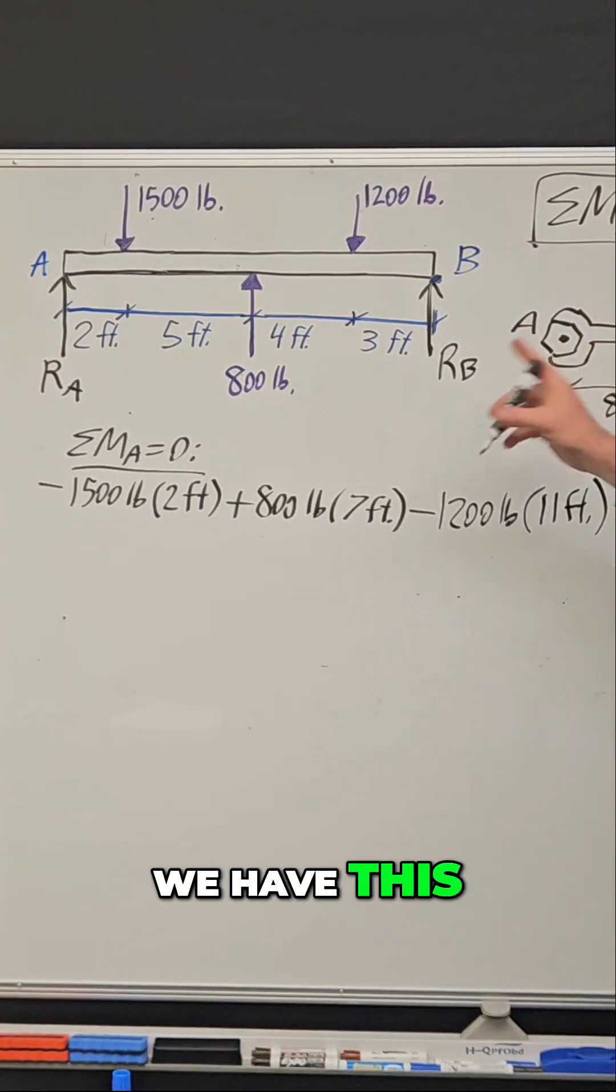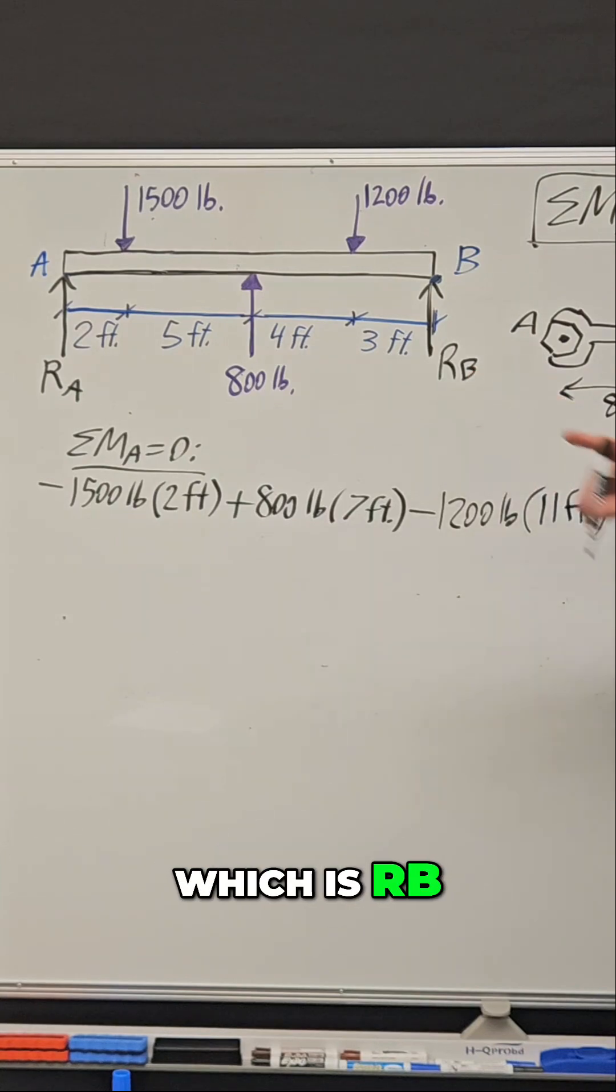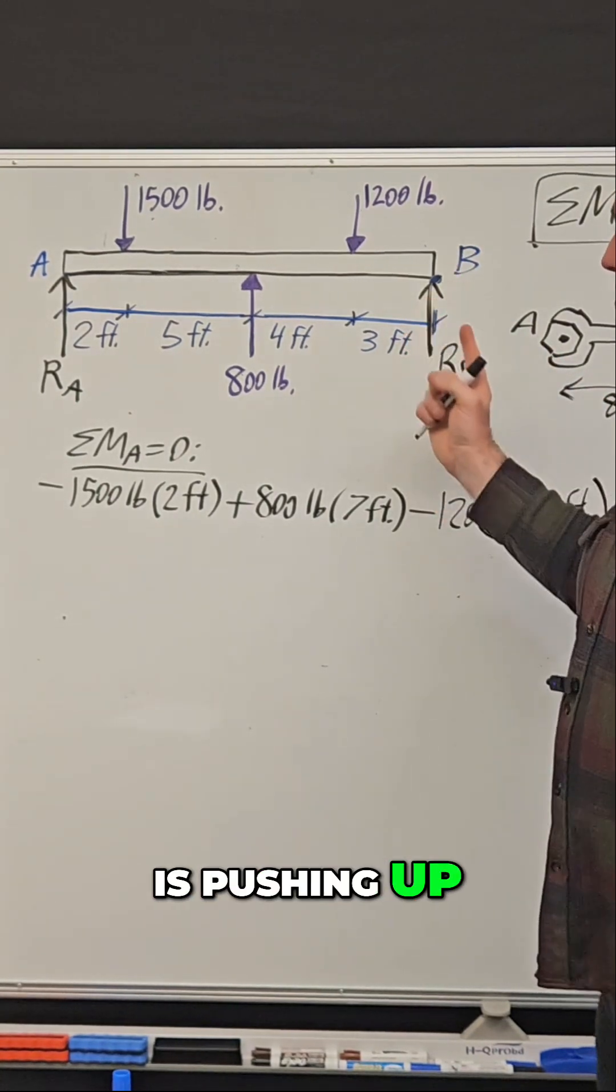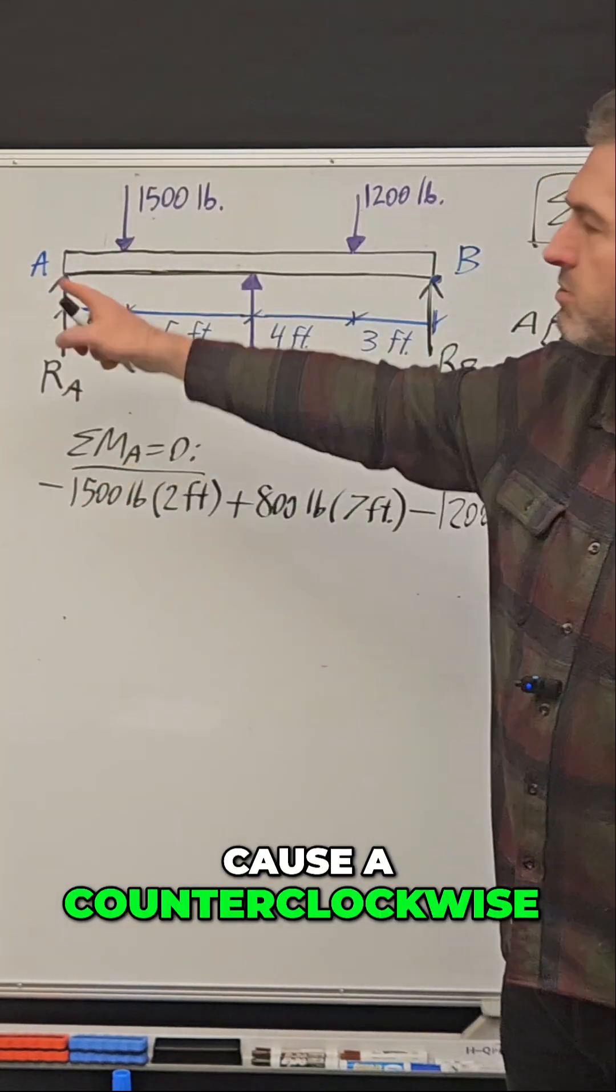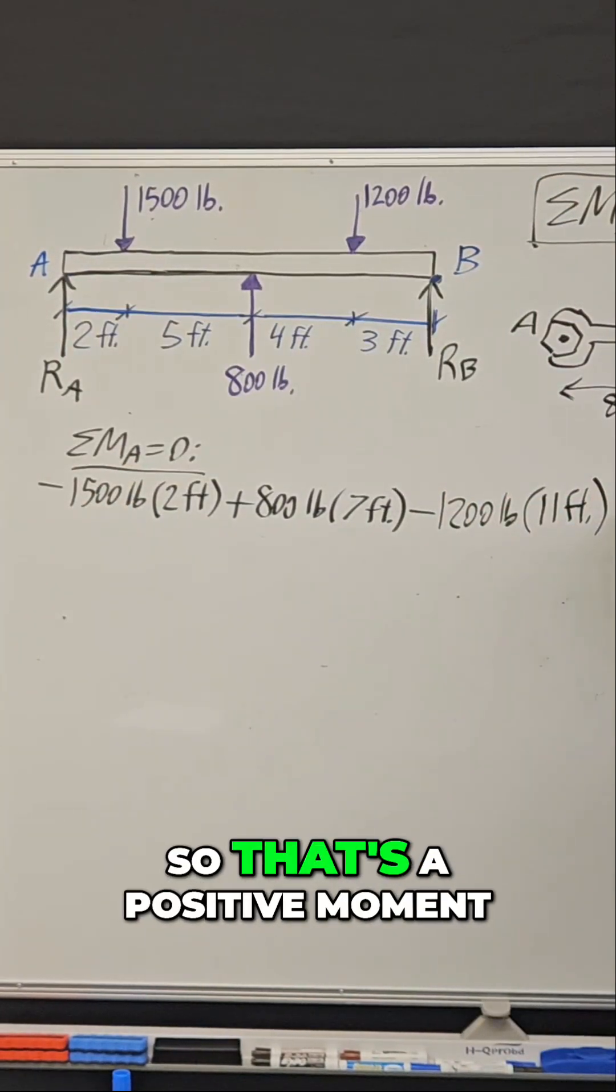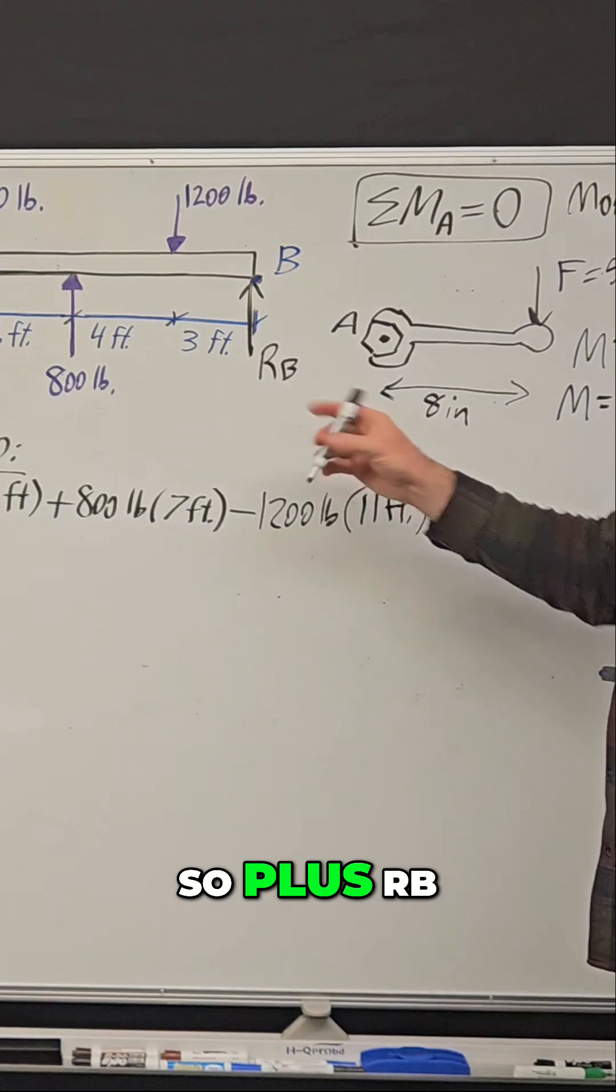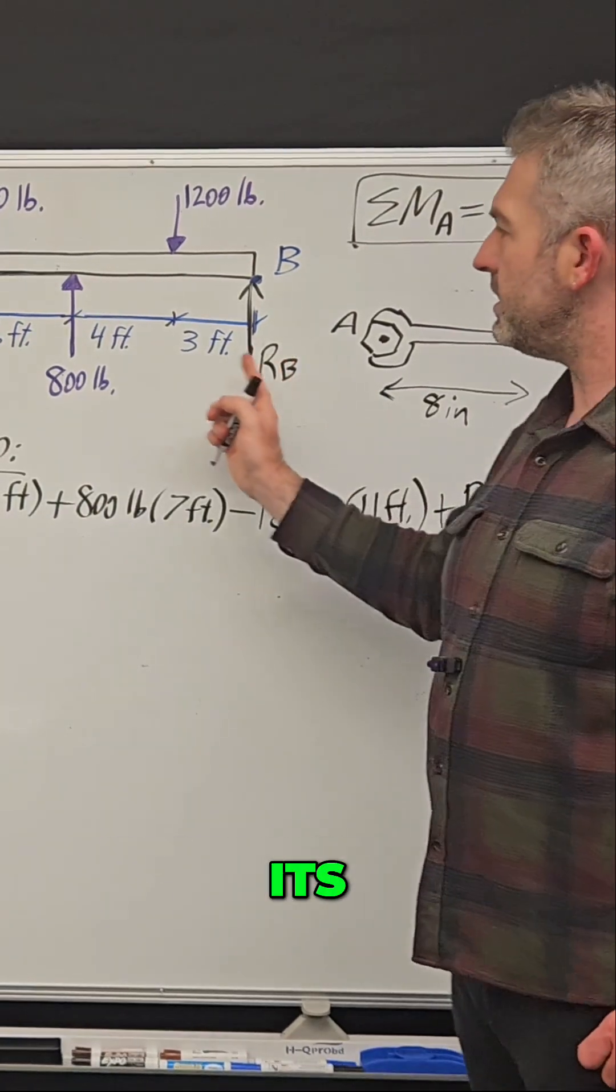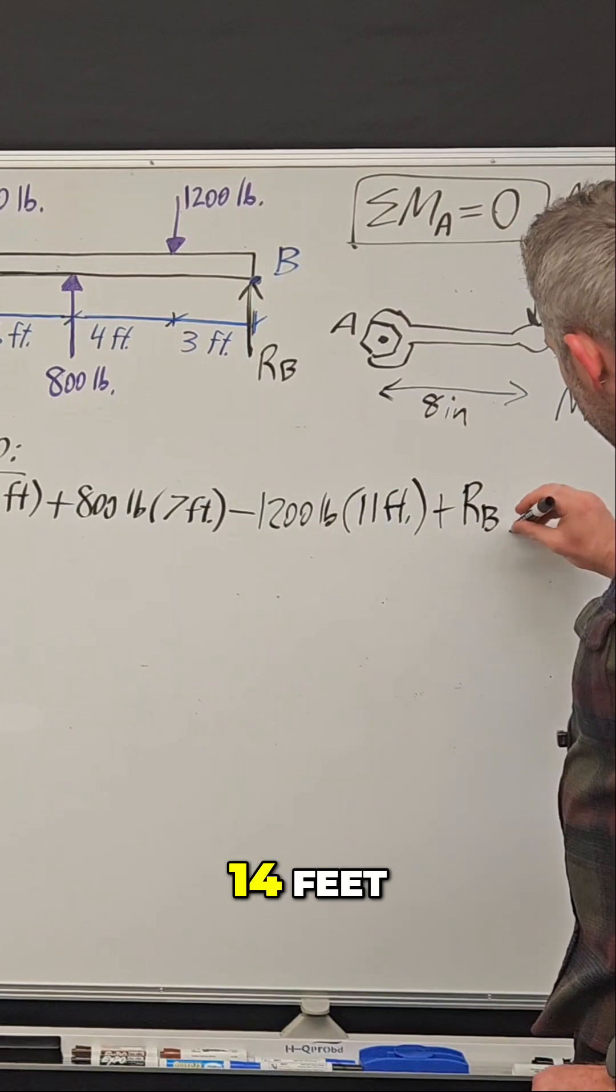And then we have this last force over here, which is RB, that reaction force from the column. And that one is pushing up, so it's going to cause a counterclockwise rotation around point A. So that's a positive moment. Plus RB times its distance away from point A, 14 feet.